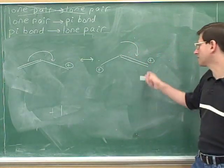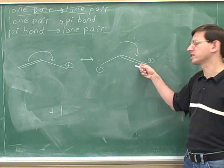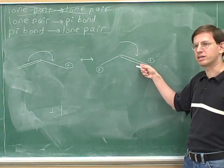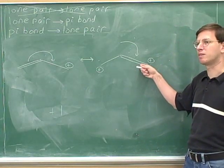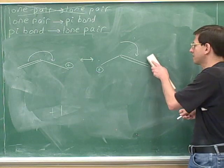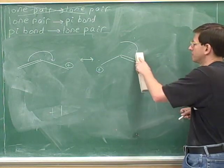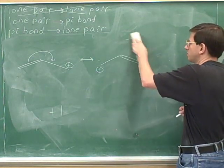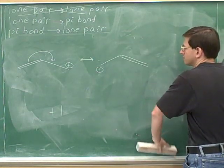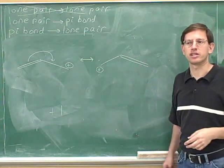Now we can see that this carbon on the right just gained the electrons from this pi bond, so it should be becoming less positive — we can erase this positive charge. And now we're done with this arrow, so we can erase the arrow. This is the correct resonance structure.